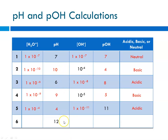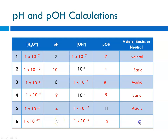Number 6: pH is 12. That means the hydronium ion concentration is 10 to the minus pH, or 10 to the minus 12. That means the pOH is 14 minus 12, which is 2. Hydroxide ion concentration is 10 to the minus 2, which is 10 to the minus pOH. pH is 12 — that's greater than 7, so this is a basic solution.